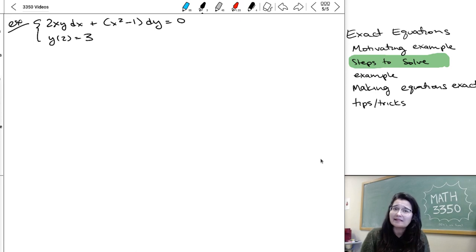It's already written as an exact equation form. And in this case, we would have that m is 2xy and n is x squared minus 1.